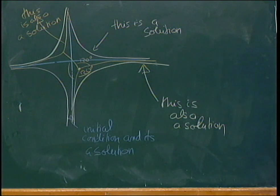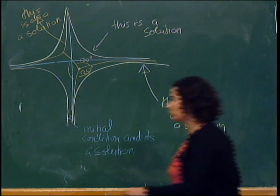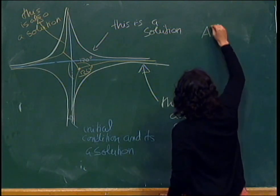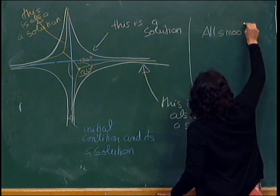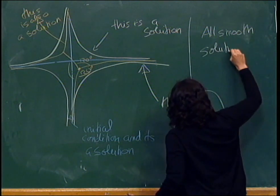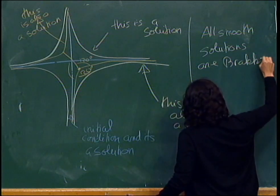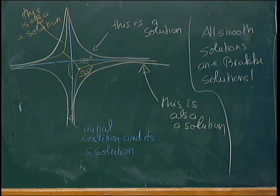It's not so hard to prove that if you have a smooth solution to mean curvature flow, it's also a Brakke solution. So all smooth solutions are Brakke solutions. That part works well.